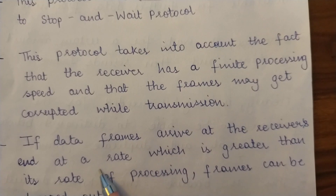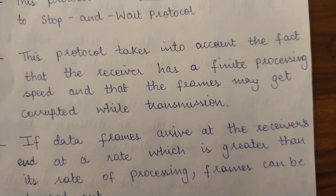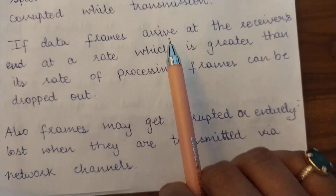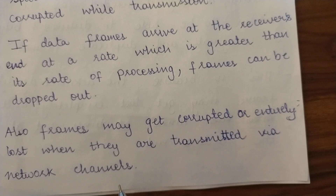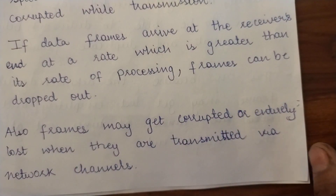If data frames arrive at the receiver's end at a rate greater than the rate at which the receiver can process them, frames can be dropped. Also, frames may get corrupted or entirely lost when transmitted via the network channel, because we are assuming the channel may be erroneous — so frames may get corrupted or damaged during the data transmission phase.